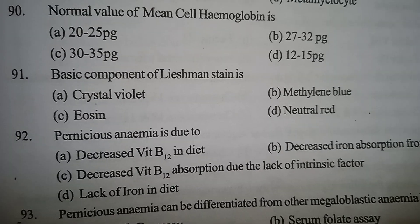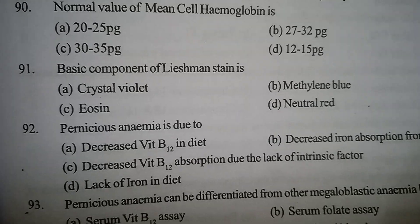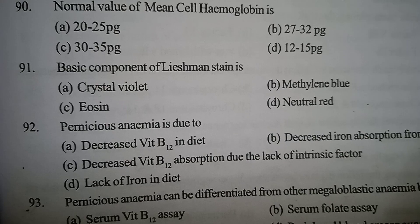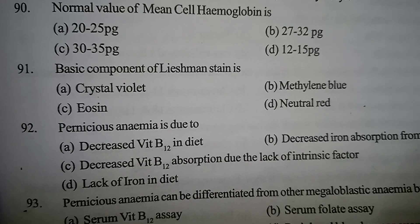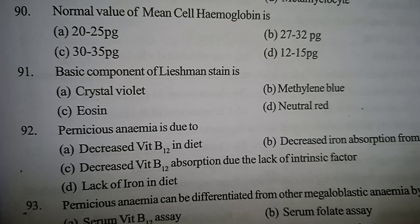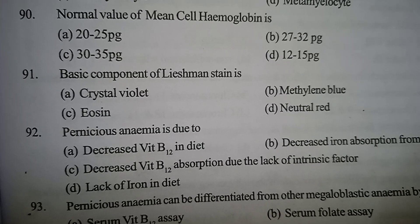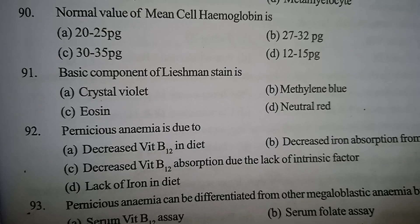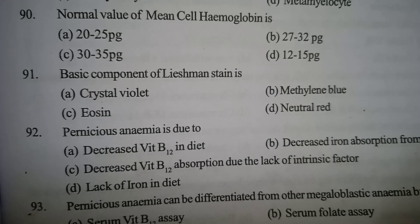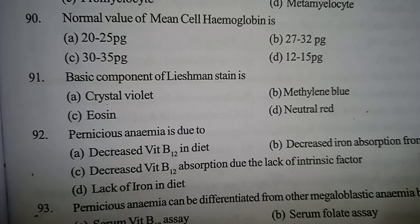Next one: what is the basic component of Leishman's stain? Option A: crystal violet. Option B: methylene blue. Option C: eosin. Option D: neutral red. Correct answer: Option B, methylene blue. Methylene blue is the basic content and eosin is the acidic content.